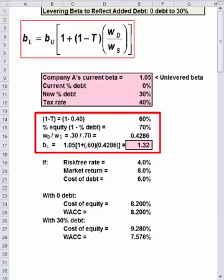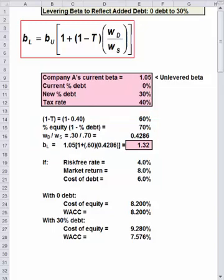Below the given data, the components of the equation are calculated: 1-T, the percentage of equity, and the ratio of debt to equity. With those components, we can compute the levered beta of 1.32.